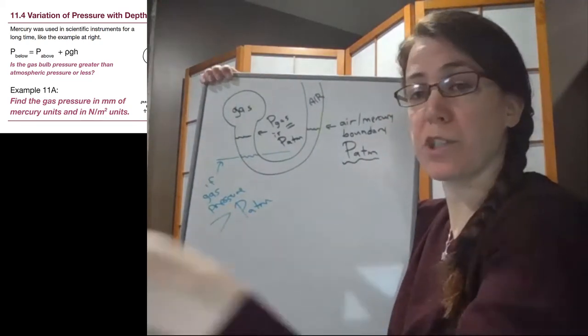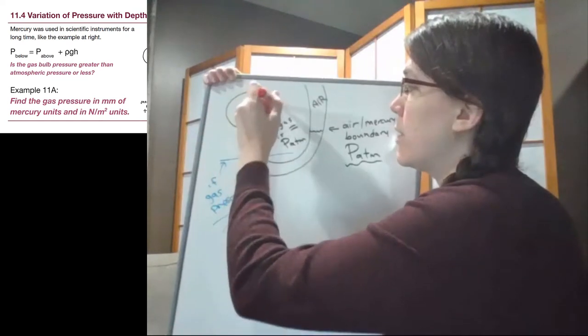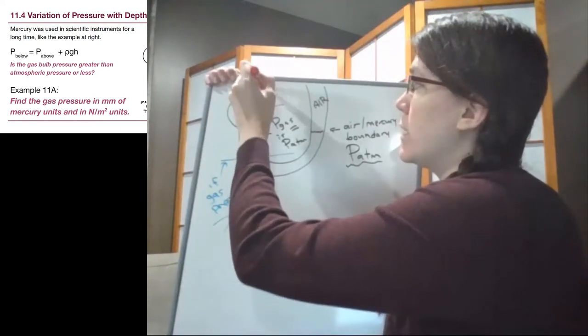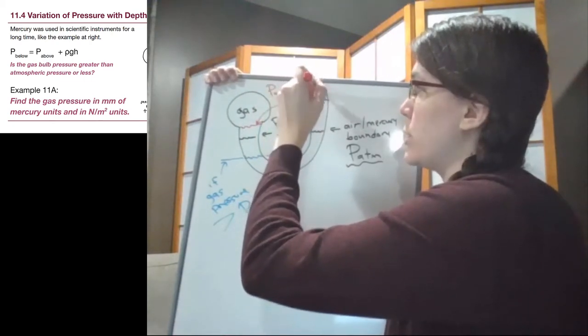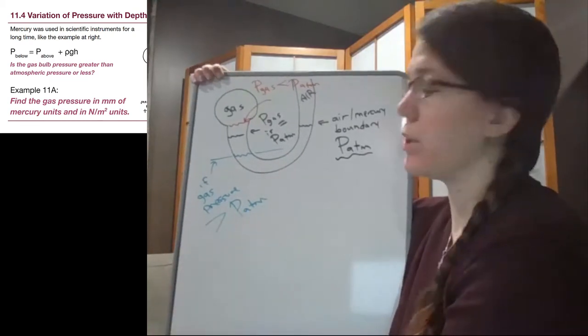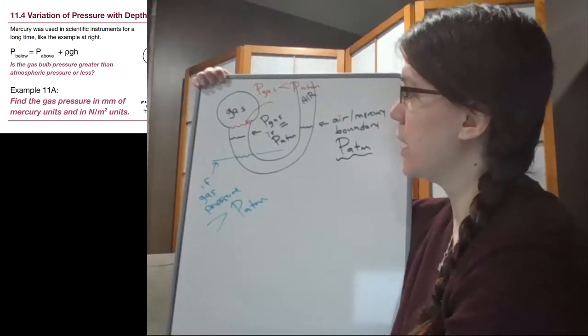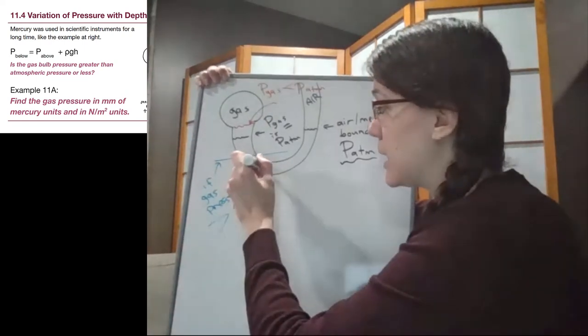Or we could have the situation as shown on our slide here, that the boundary is such that the gas pressure is less than the atmospheric pressure. That the gas is not pushing as hard on that liquid mercury.